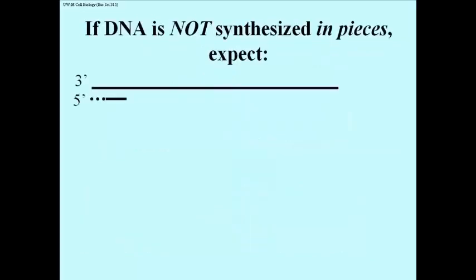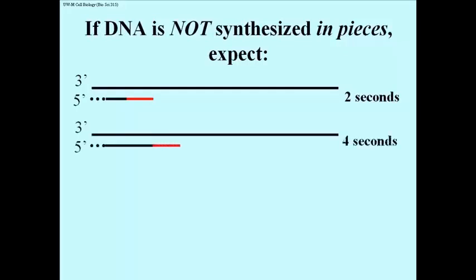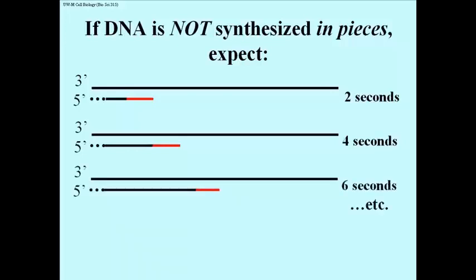Here's what one might expect in this experiment if both strands were somehow synthesized continuously and not in fragments. After 2 seconds, only short lengths of DNA would have replicated, and the added radioactive nucleotides would be put on the ends of these fragments, as shown in red here. After 4 seconds of replication, the replicated DNA would be longer, and the radioactive bits would be added to these longer pieces. And after longer and longer times of phage infection, the labeled radioactive nucleotides would be added to longer and longer lengths of replicated DNA.